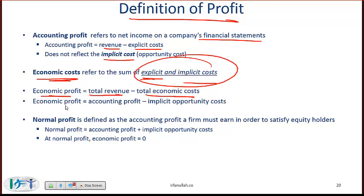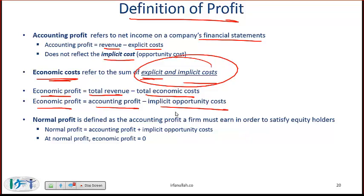So what is the relationship between economic profit and accounting profit? The relationship is that economic profit equals accounting profit — which does not account for implicit costs — minus the implicit or opportunity costs.